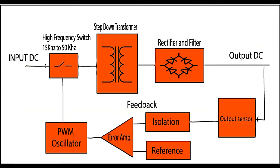The switching power supply output is regulated by pulse width modulation, as shown in the circuit. The switch is driven by the PWM oscillator, which indirectly controls the step-down transformer. The output is controlled by the PWM signal — the output voltage and PWM signal are proportionally related. If the duty cycle is 50%, maximum power is transferred through the transformer. If the duty cycle drops, the power in the transformer also drops, decreasing power dissipation.